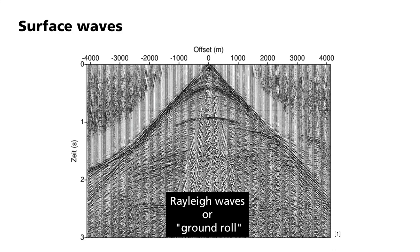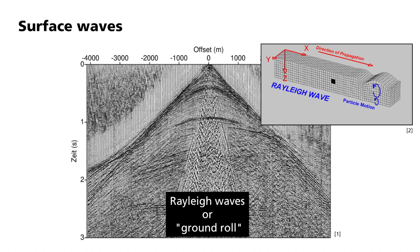In this animation, you can see the elliptical movement of this kind of surface wave. Near the surface, this usually occurs retrograde, in other words counterclockwise, whereas deeper down it occurs prograde or clockwise. The amplitudes of the surface waves decrease exponentially with depth. Already at a depth of only one wavelength, the amplitude is very small.